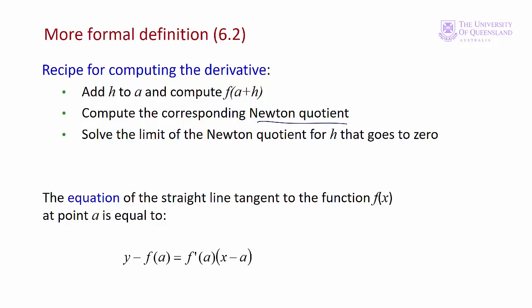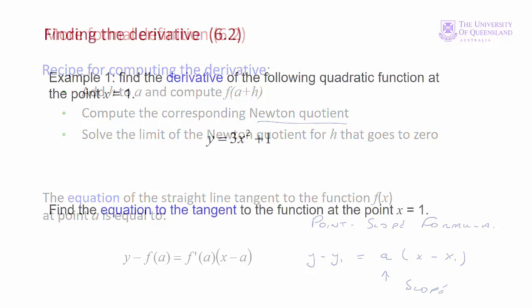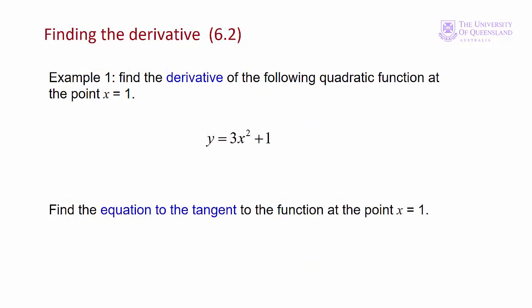Remember our point-slope formula: y - y1 = a(x - x1), where in this case a is the slope. Pause this video now and have a look at the video for example one.